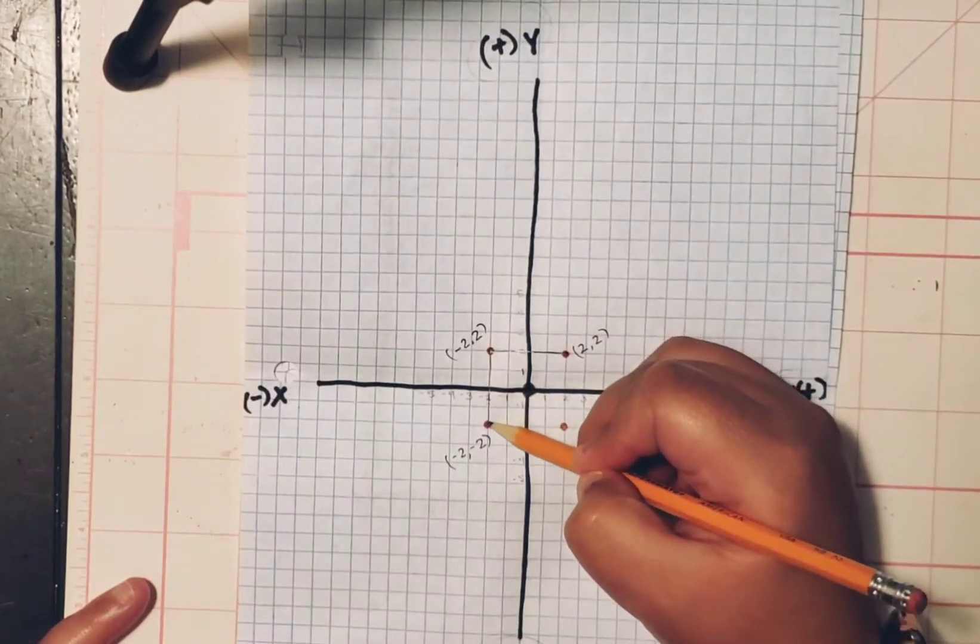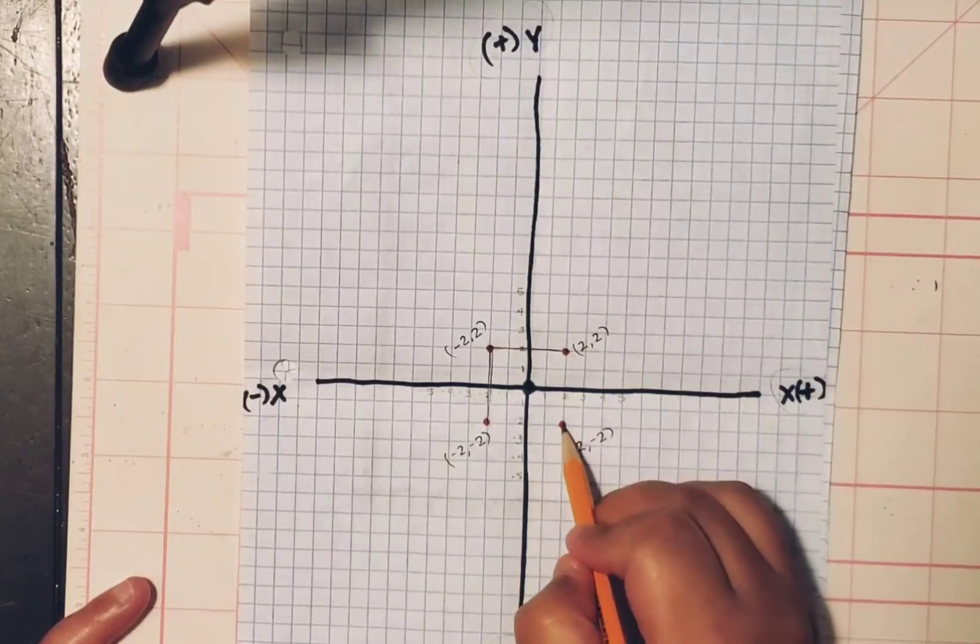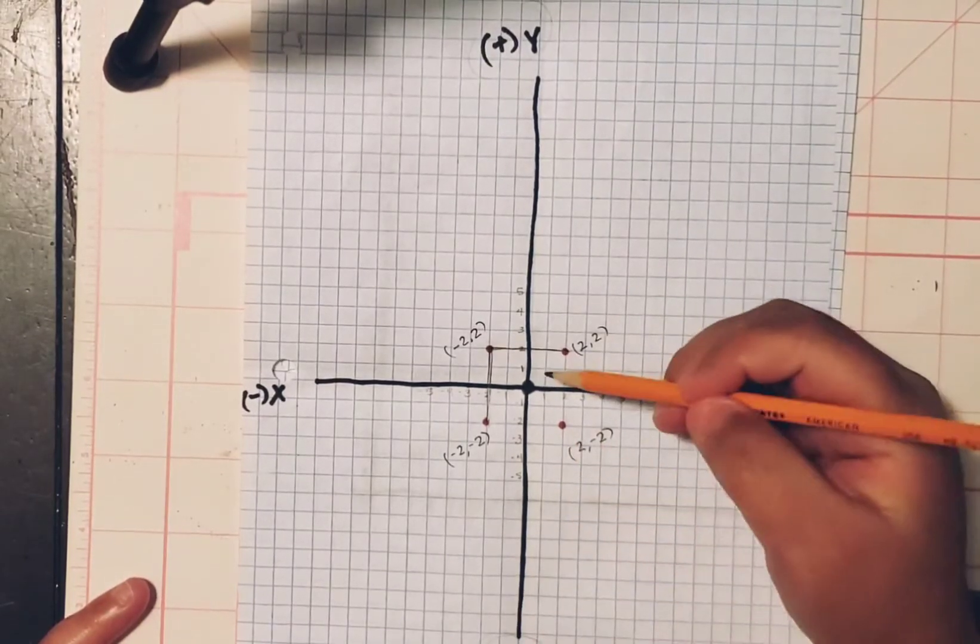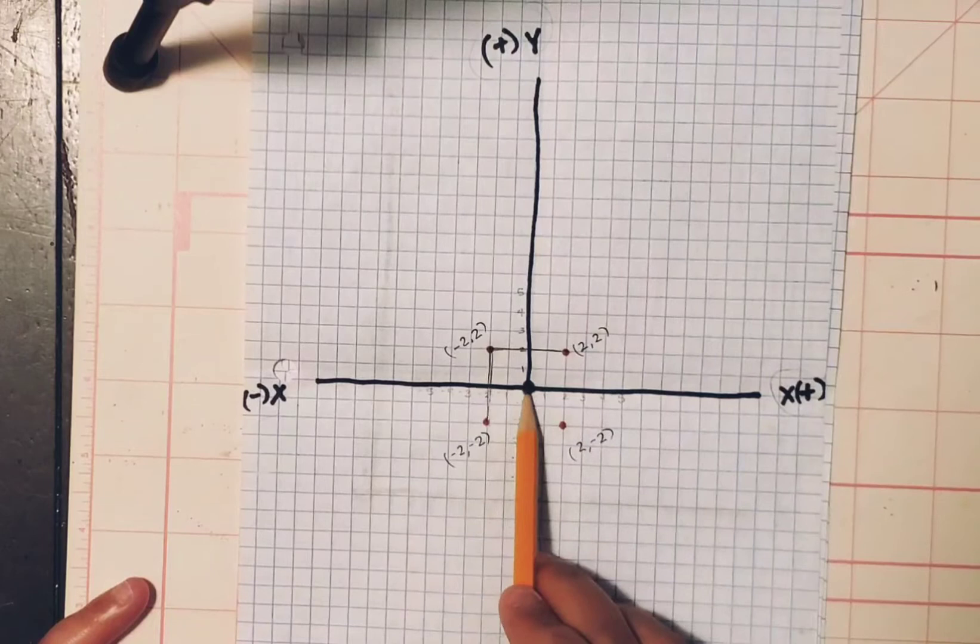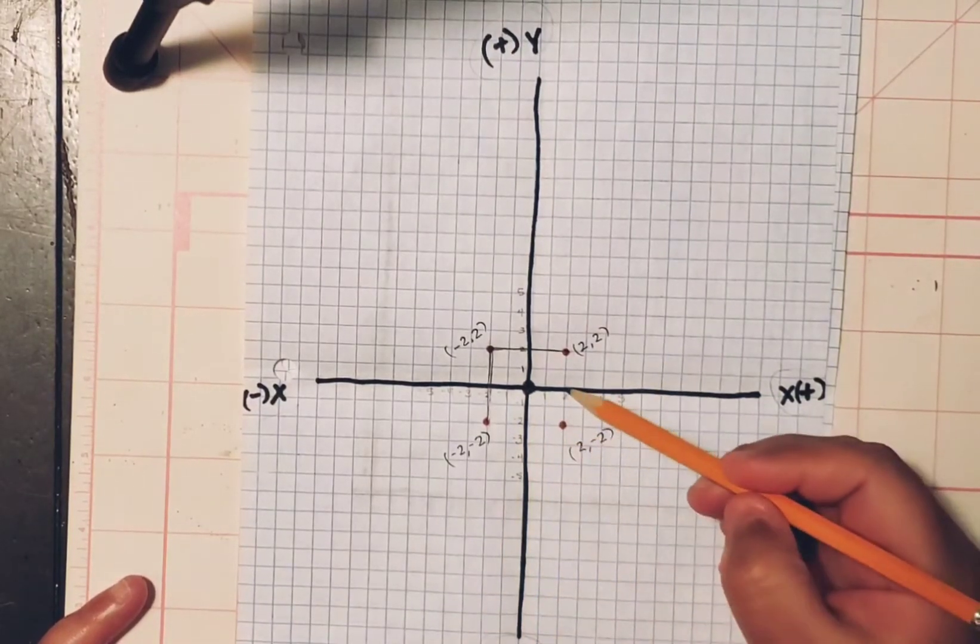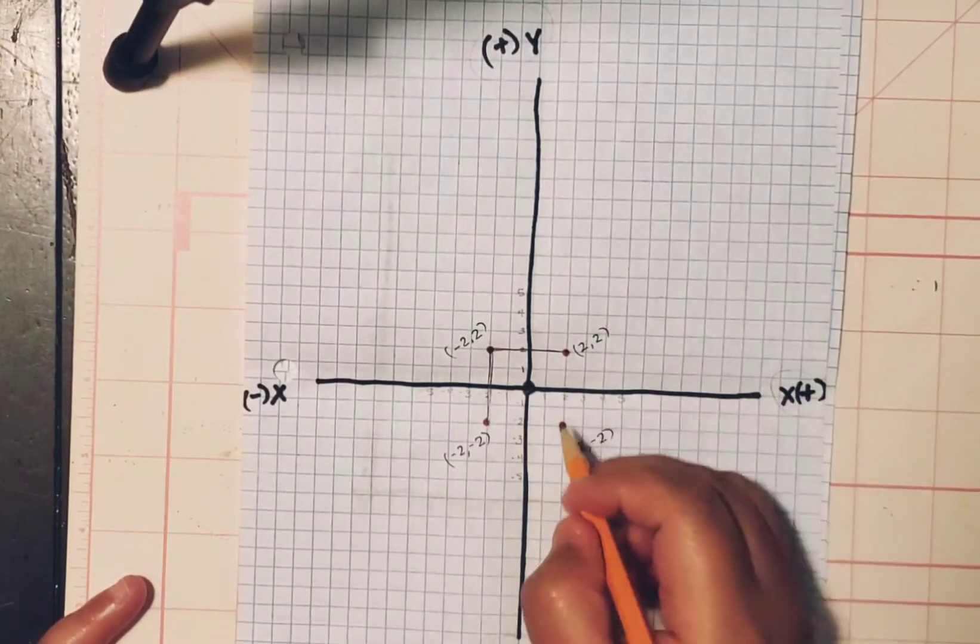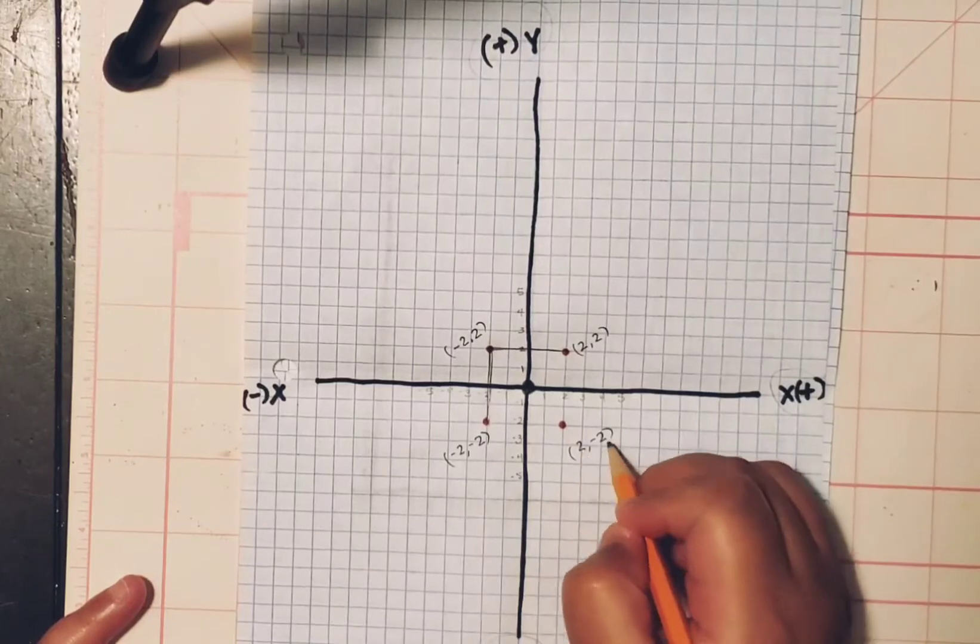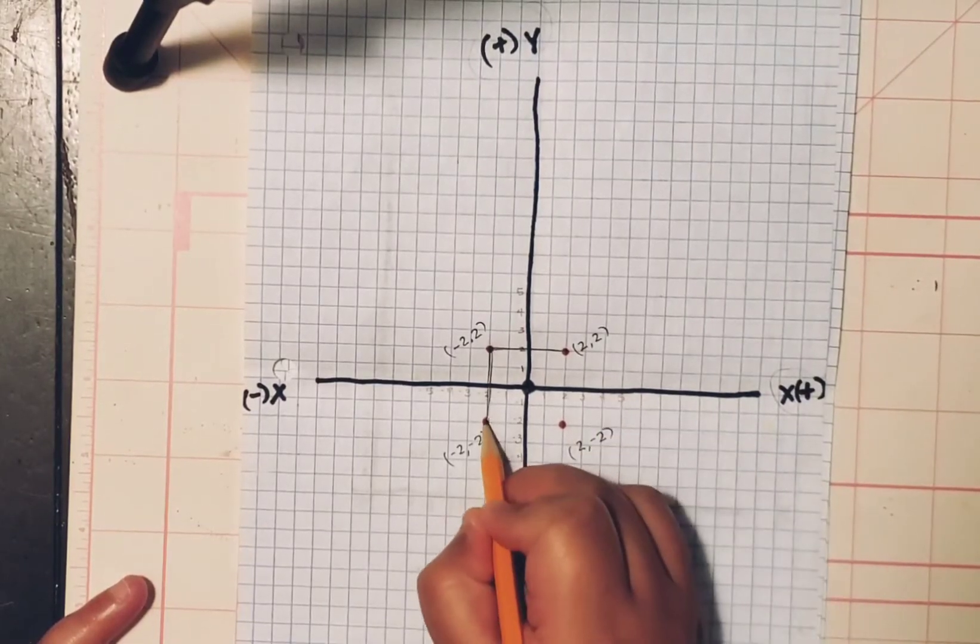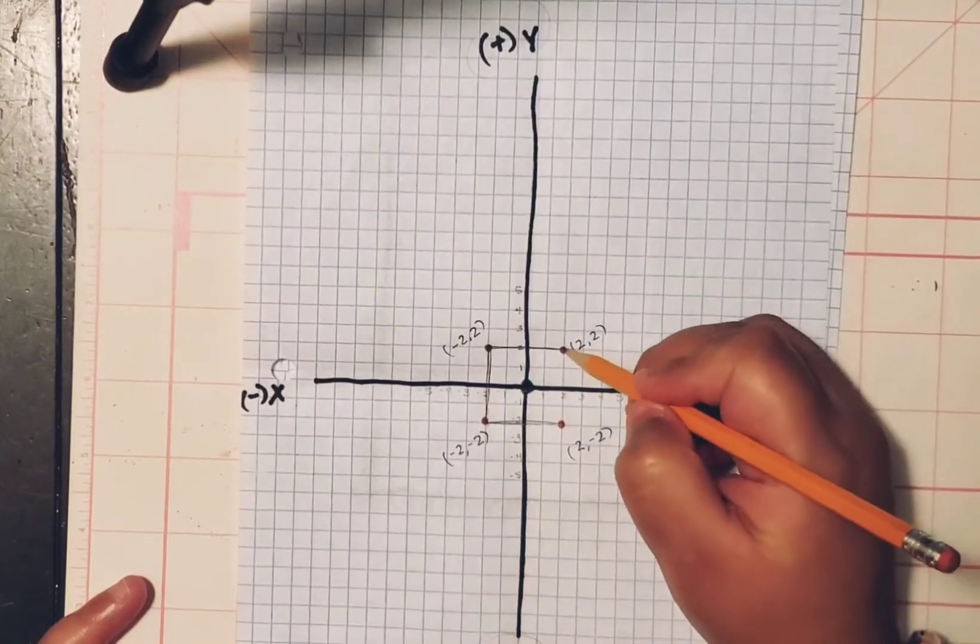Then we connect this point right here. Again, we start on the X, middle. You move two points to the right. And we move two points down to the bottom. Negative two. So positive two to a negative two. We connect. And it becomes your square.